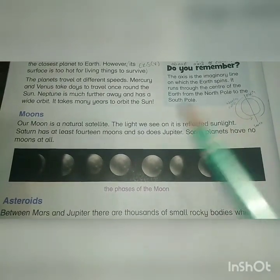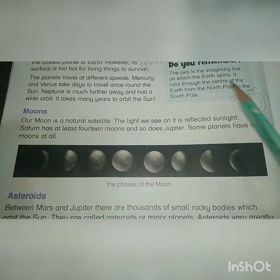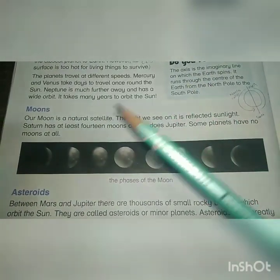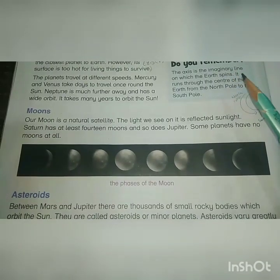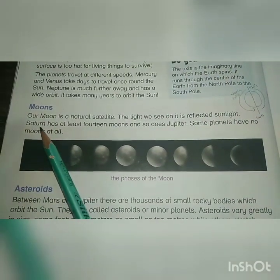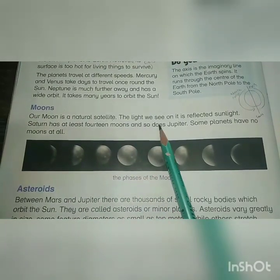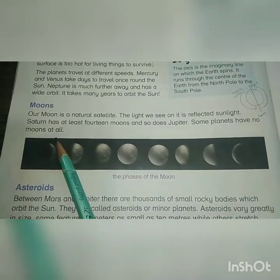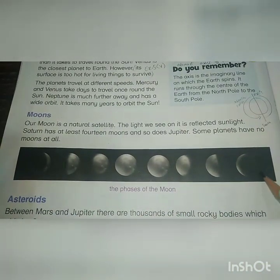The number of moons is different for each planet. Our Earth has one moon. Some planets have more than one — Saturn has at least 14 moons, and so does Jupiter. Some planets have no moons at all.